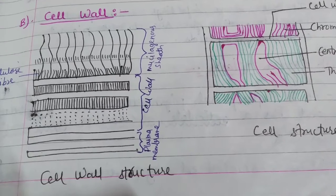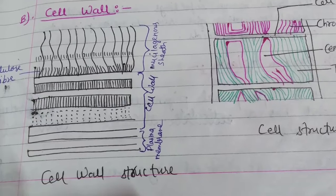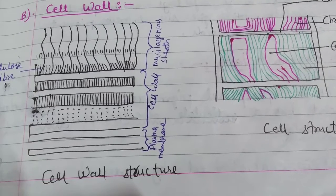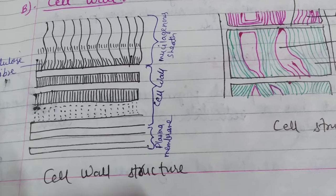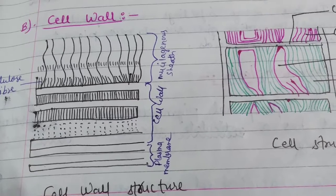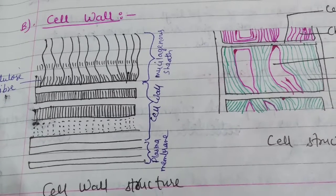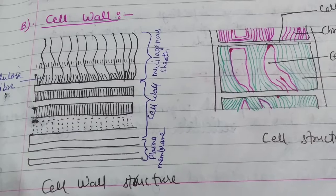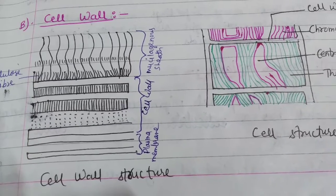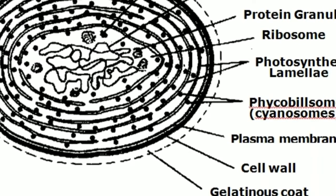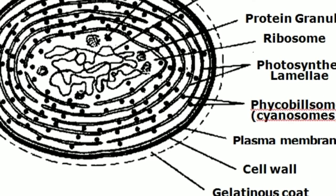Chromatoplasm is characterized by presence of flattened vesicular structure known as thylakoids or photosynthetic lamellae. A lamellae is composed of two membranes which are joined at the ends and encloses an intrathylakoid space of 70-80 angstrom width.